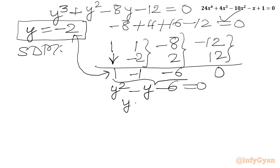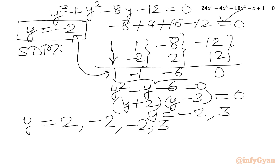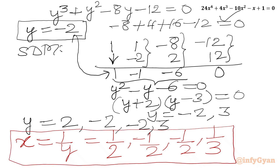We factorize y² minus y minus 6 as (y plus 2)(y minus 3) equal to 0, giving y equal to minus 2 or y equal to 3. So our overall y solutions are: y equal to 2, y equal to minus 2, y equal to minus 2, and y equal to 3. Since x equals 1 over y, we take reciprocals: x equals 1/2, minus 1/2, minus 1/2, and 1/3. So here we have 4 real solutions, same as in method 1.